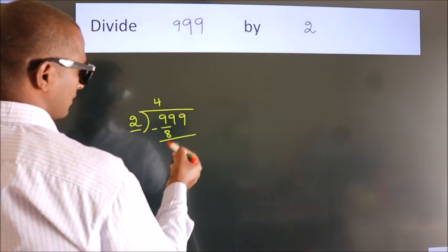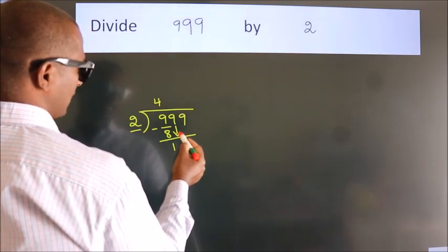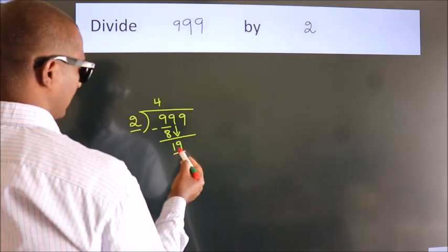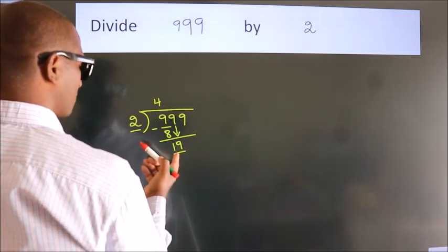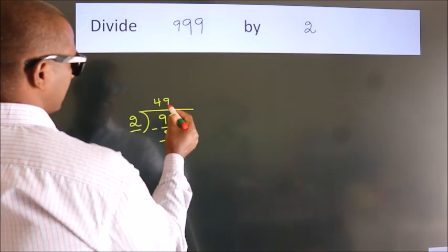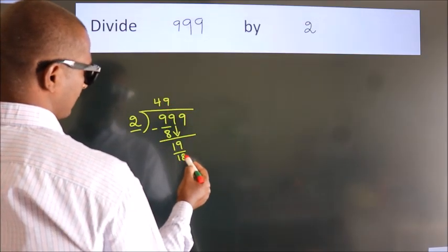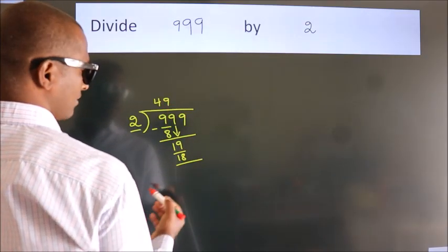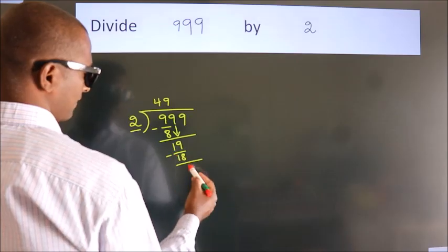After this, bring down the next number. So 9 down, so 19. A number close to 19 in 2 table is 2 times 9 is 18. Now we subtract. We get 1.